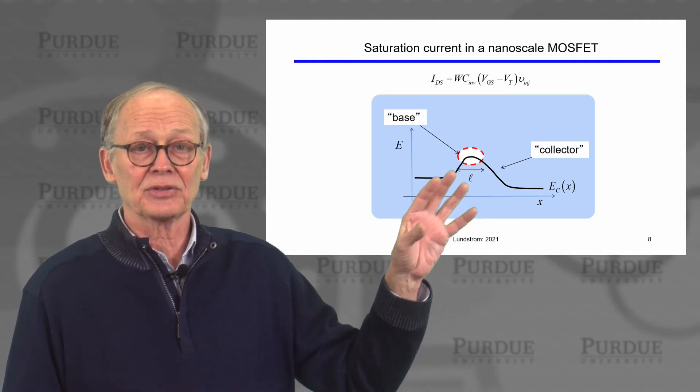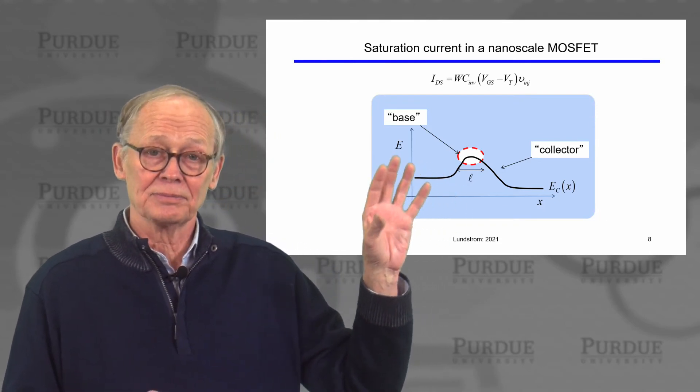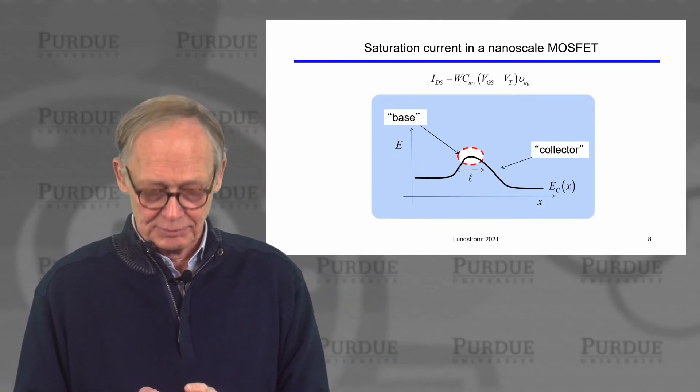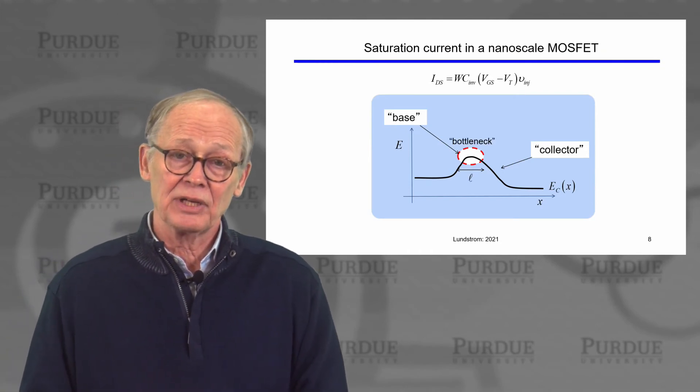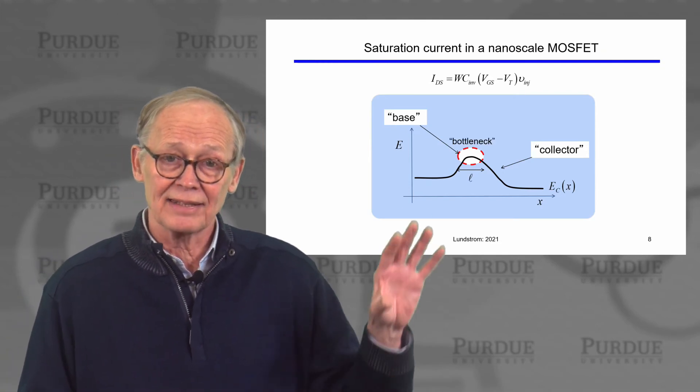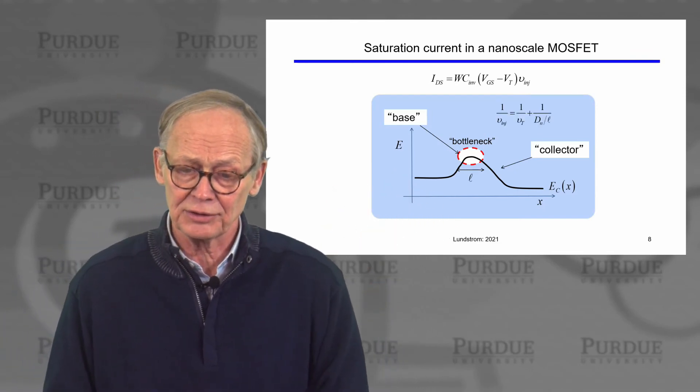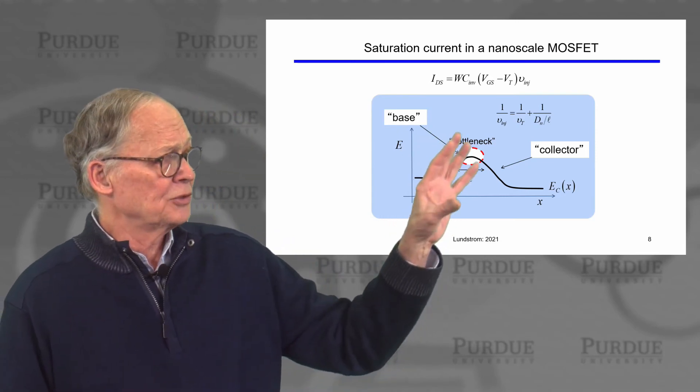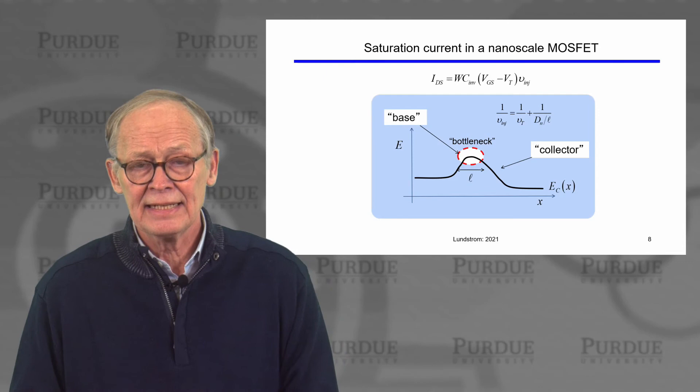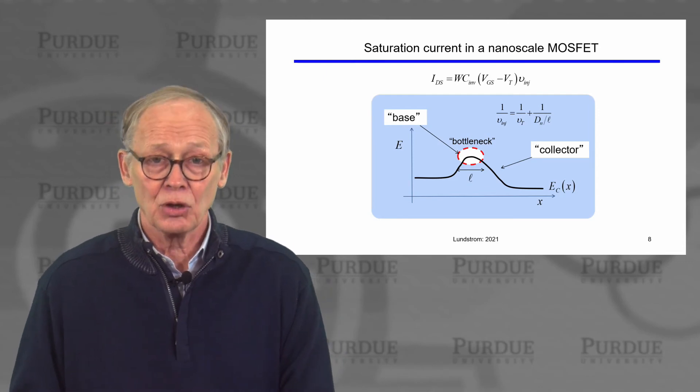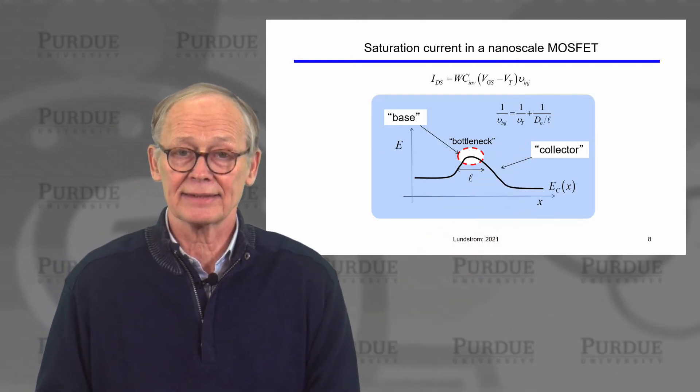Here we have a source and electrons are injected from the source over the barrier into the top of the barrier in this bottleneck regime. So that bottleneck regime is really the very important region that limits the current just like the base limits the current in most bipolar transistors. And the way we interpret our expression for the injection velocity is that it is the slower of the two velocities, of the ballistic velocity and of the diffusion velocity.